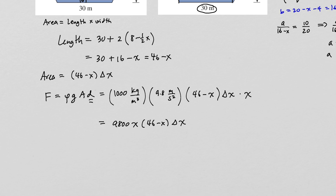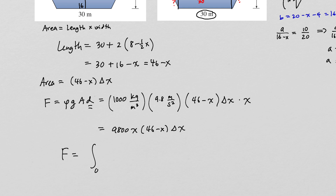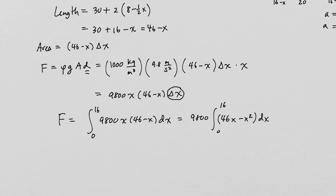To calculate the total force on the whole shape, we take the integral. We only integrate where there is water, which goes from 0 to 16. So the total force is the integral from 0 to 16 of 9,800x(46 − x) dx. Pulling out 9,800, we integrate 46x − x² to get 23x² − x³/3, evaluated from 0 to 16.